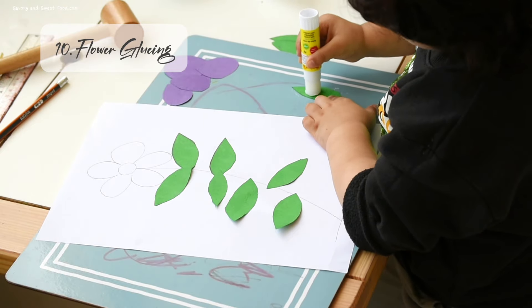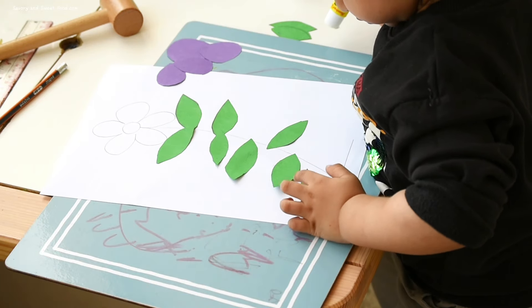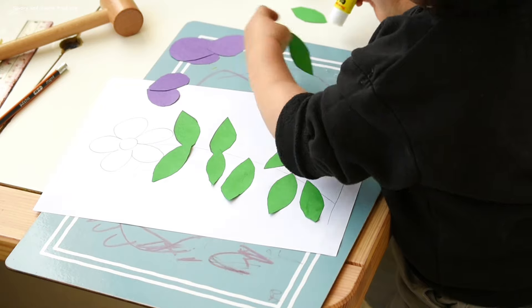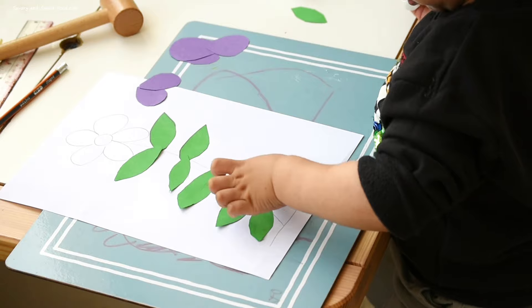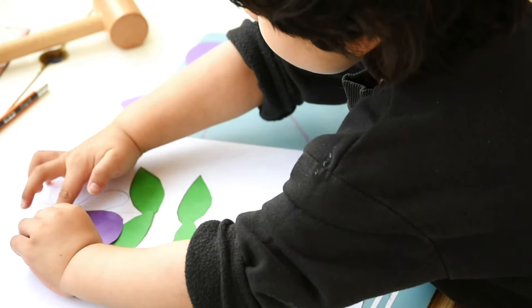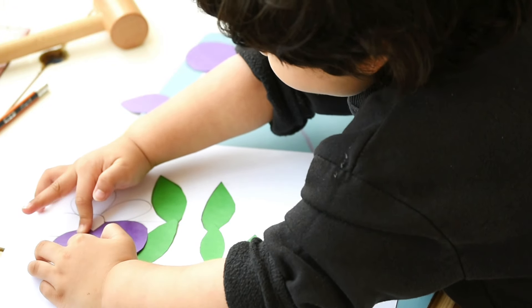Wrapping up with the charming flower gluing activity. I drew a flower and cut out leaves and petals. I gave him a glue stick and his task was to place each leaf and petal in its designated space on the picture. It's a simple way to explore creativity and fine motor skills.